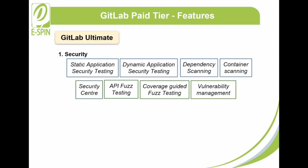Security center is a personalized space to visualize the latest security status for each project and across projects, including a security dashboard, vulnerability report, and settings. API fuzz testing is a great way to find bugs and vulnerabilities in web apps and APIs that other scanners and testing techniques miss. Coverage-guided fuzz testing sends random inputs to an instrumented version of your application in an effort to cause unexpected behavior, such as a crash. Vulnerability management helps identify and manage vulnerabilities in assets and application code.